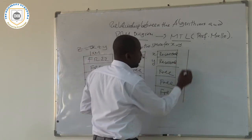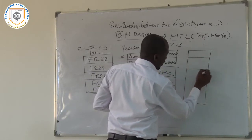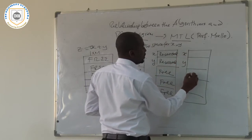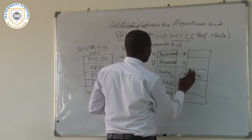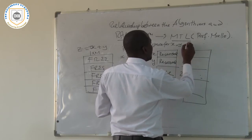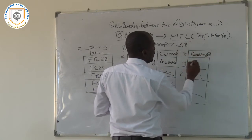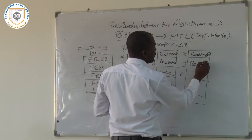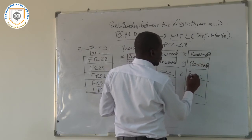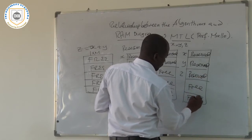The third process is to reserve a space for Z, the output. Now this third space also becomes reserved. So at this point — after reserving space for both inputs X and Y and output Z — we have three reserved spaces, while the remaining two continue to be free.